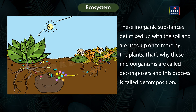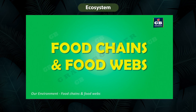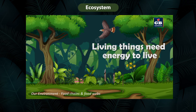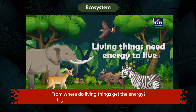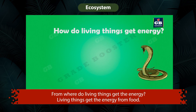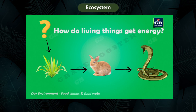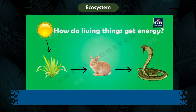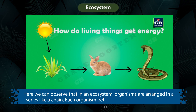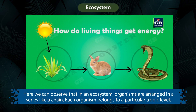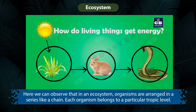Because microorganisms return nutrients to the soil they are called decomposers, and this process is called decomposition. Living things need energy to live — they get it from food. A snake gets energy by eating a rabbit, so energy flows from the rabbit to the snake. The rabbit gets energy from the plants it eats, and plants get their energy from the sun.